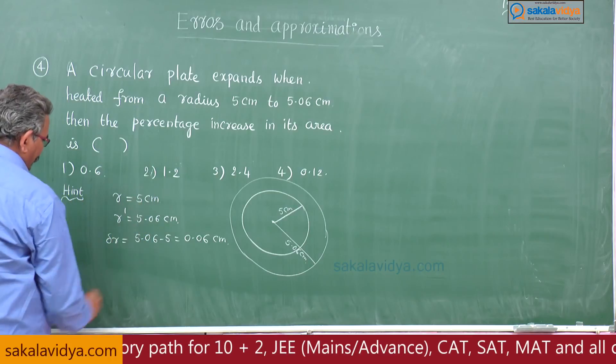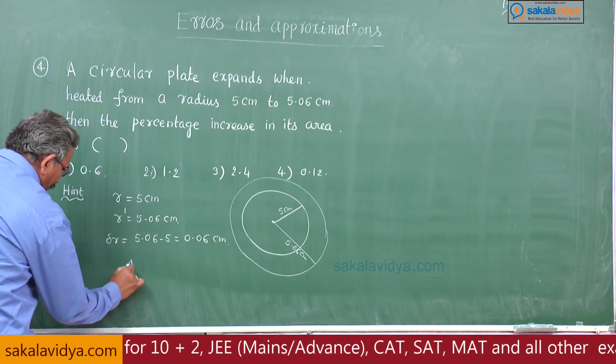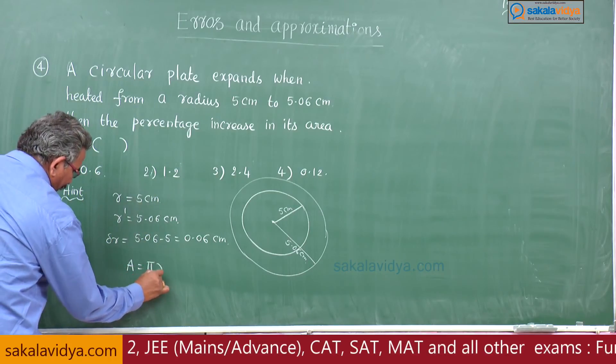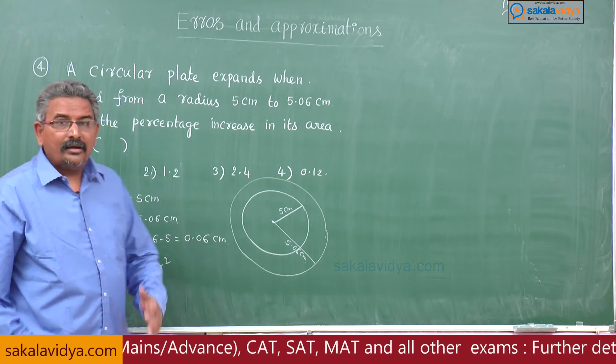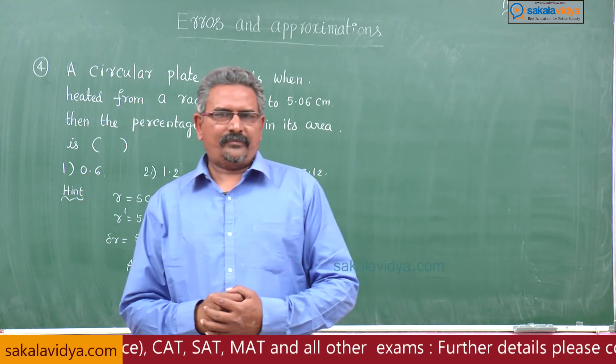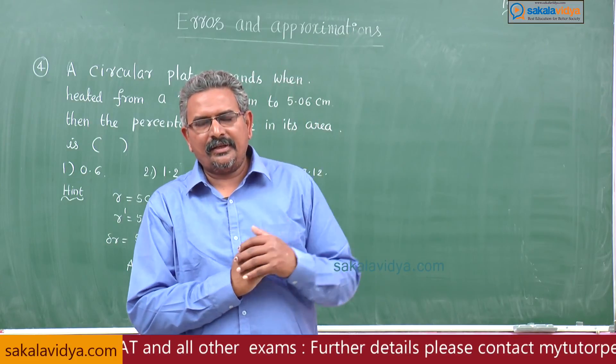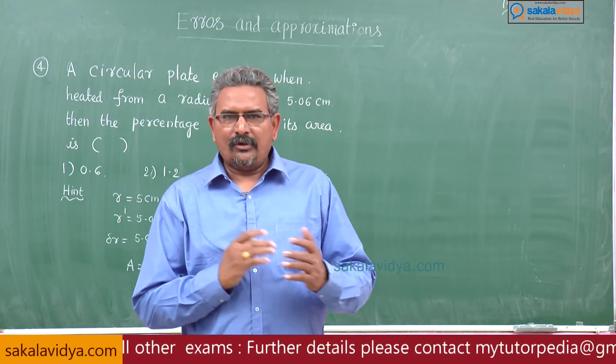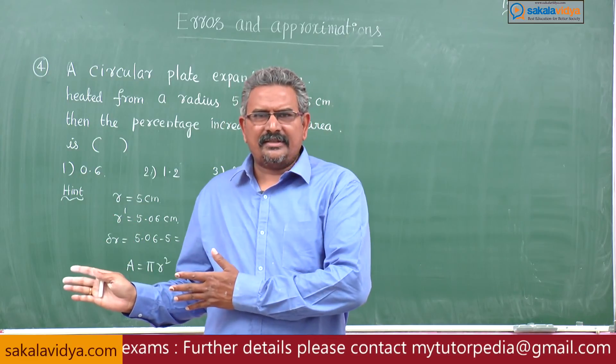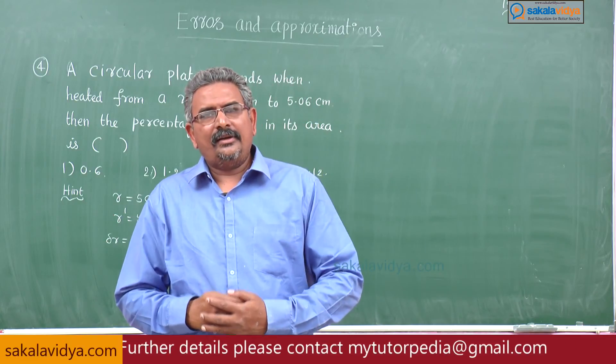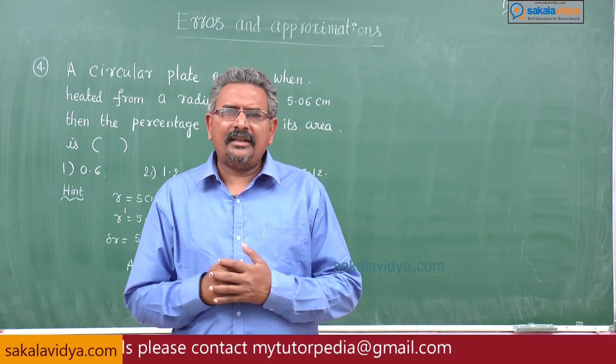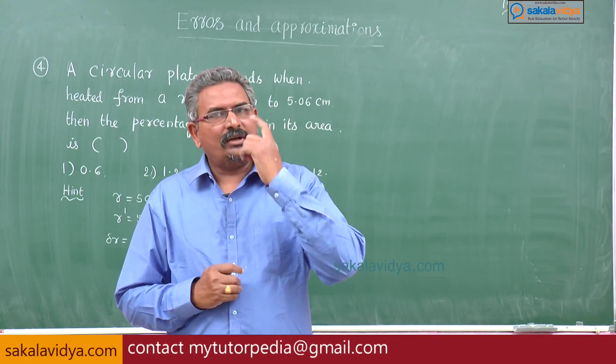We know area of the circle is given by a is equal to pi r square. Let me explain the traditional method. In general traditional method, in order to point out the percentage error, you have to apply the logarithm on both sides and you have to differentiate and you have to substitute the values and it takes very very lengthy method, but I will give you one clue.